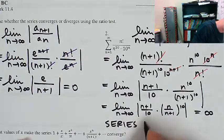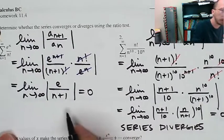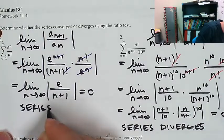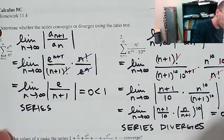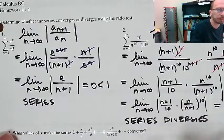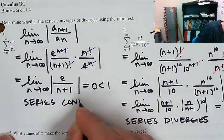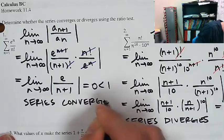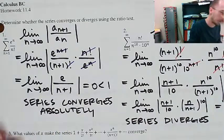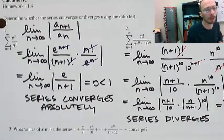I realize I didn't conclude the first problem. Going back: the limit was 0, which is less than 1, so the series converges absolutely. Because if we can show that the series converges using the ratio test, then we know it converges absolutely.